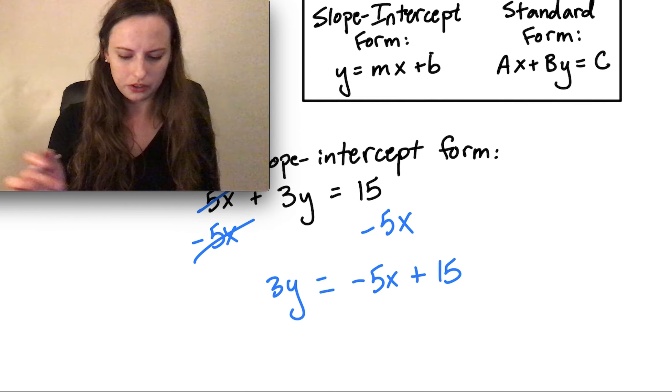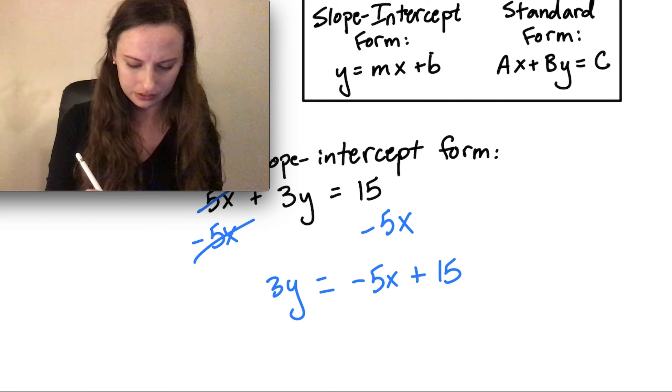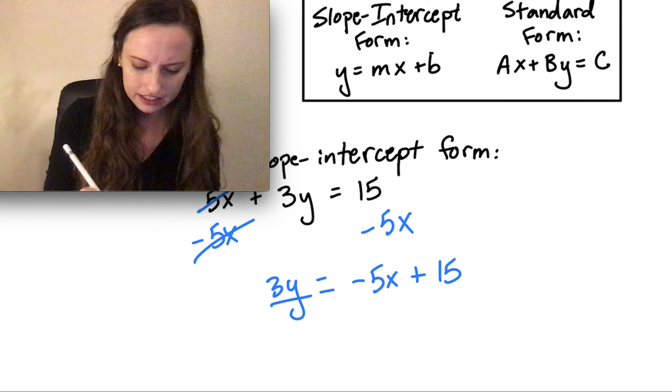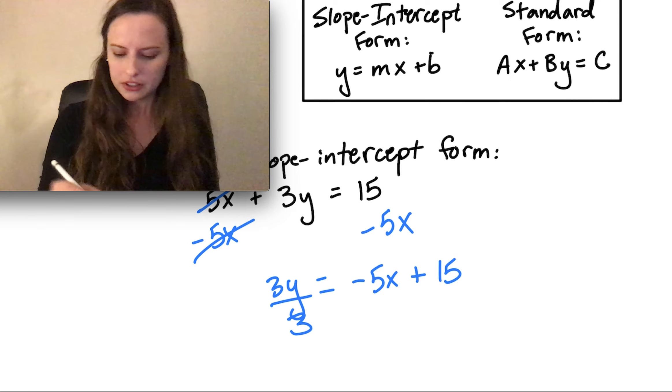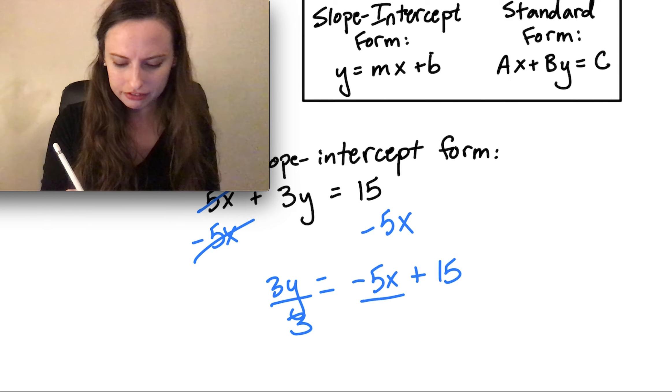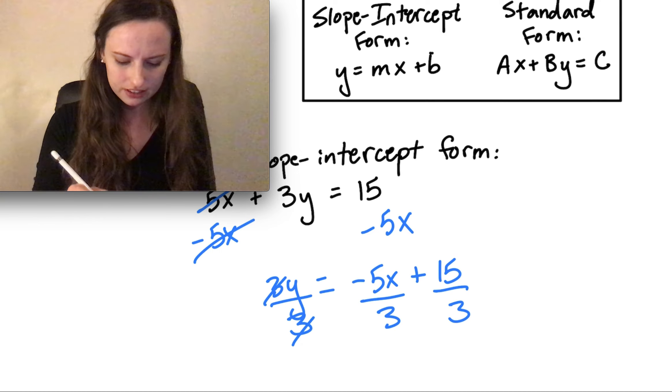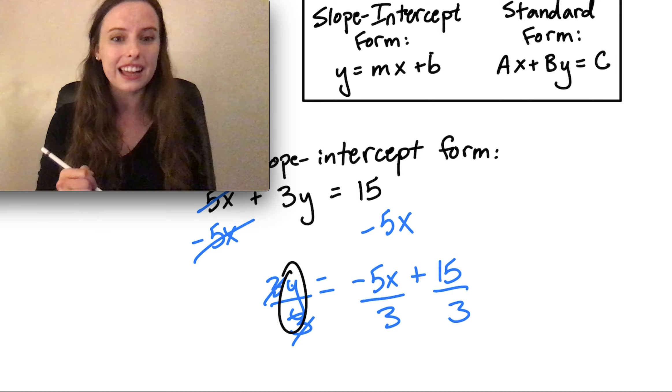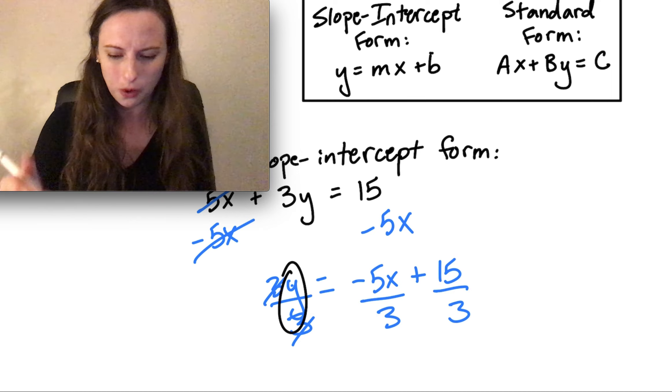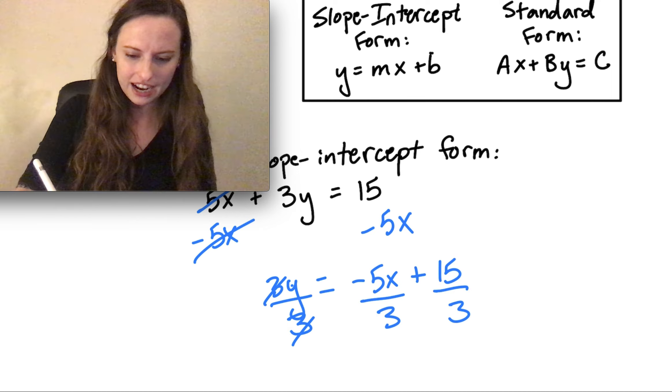Our next step is to, again, we want y by itself, so now we'll divide both sides by 3. I'm going to remember to divide every term by 3. Here, my 3s cancel out, leaving me with just that y left over, which is exactly what I wanted. So we have y equals.